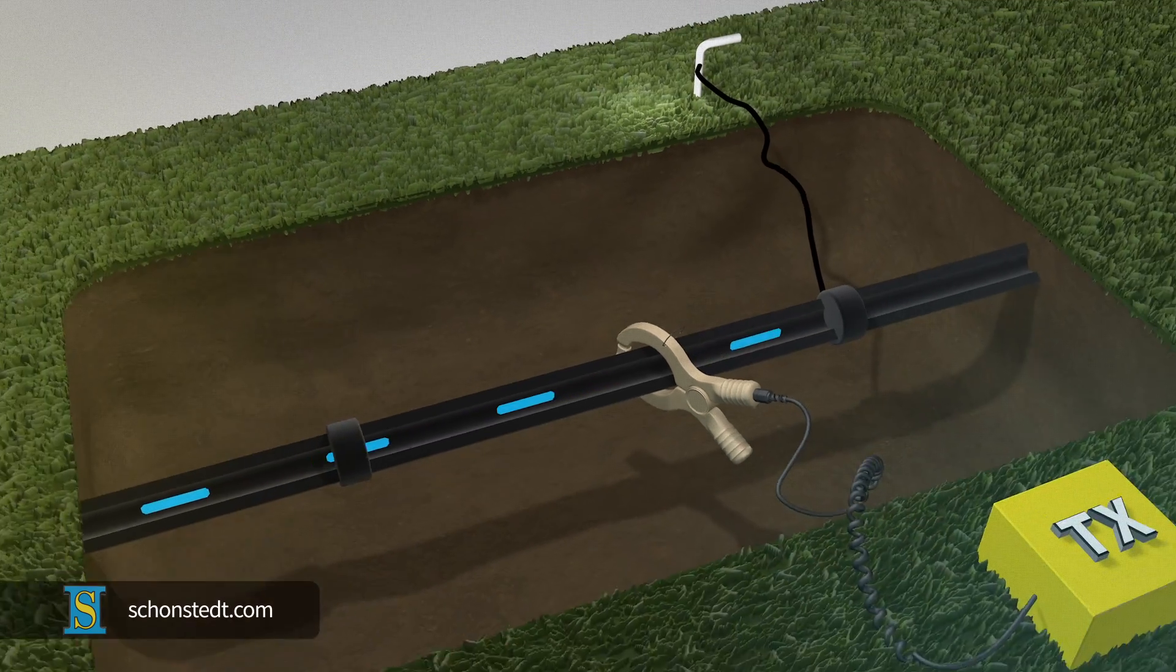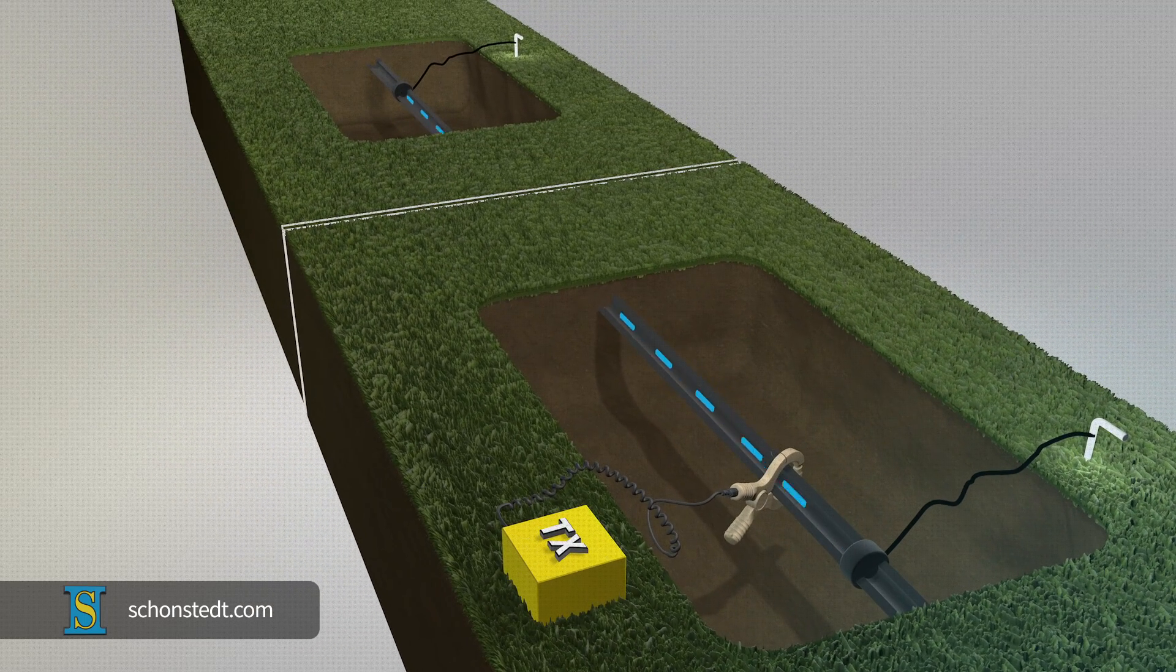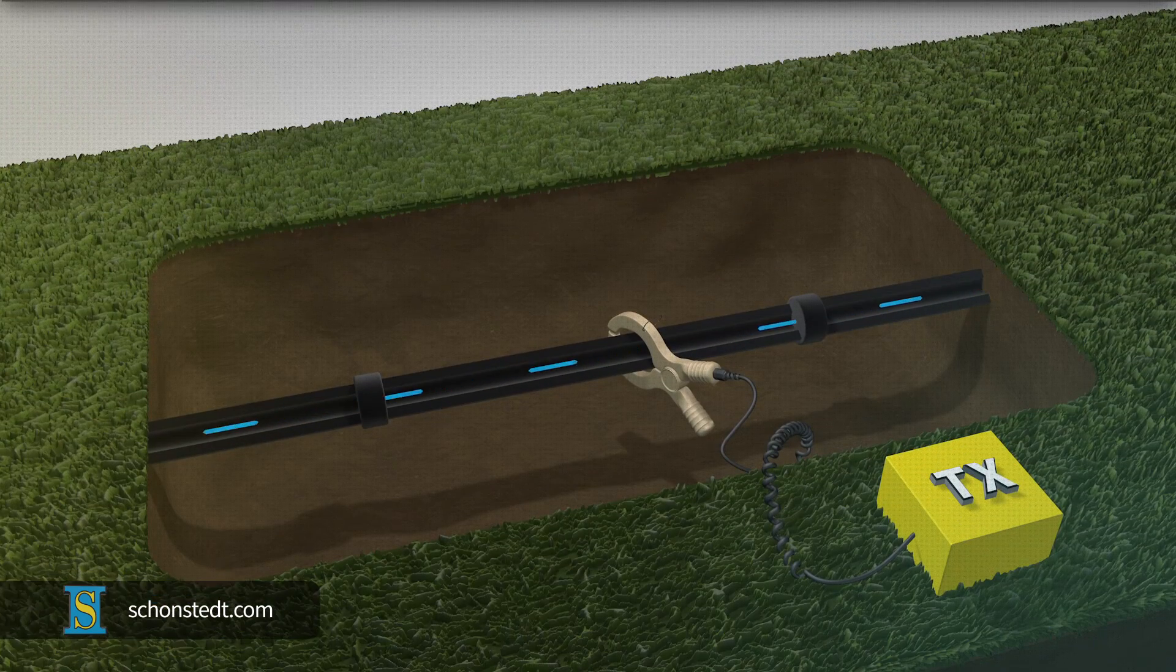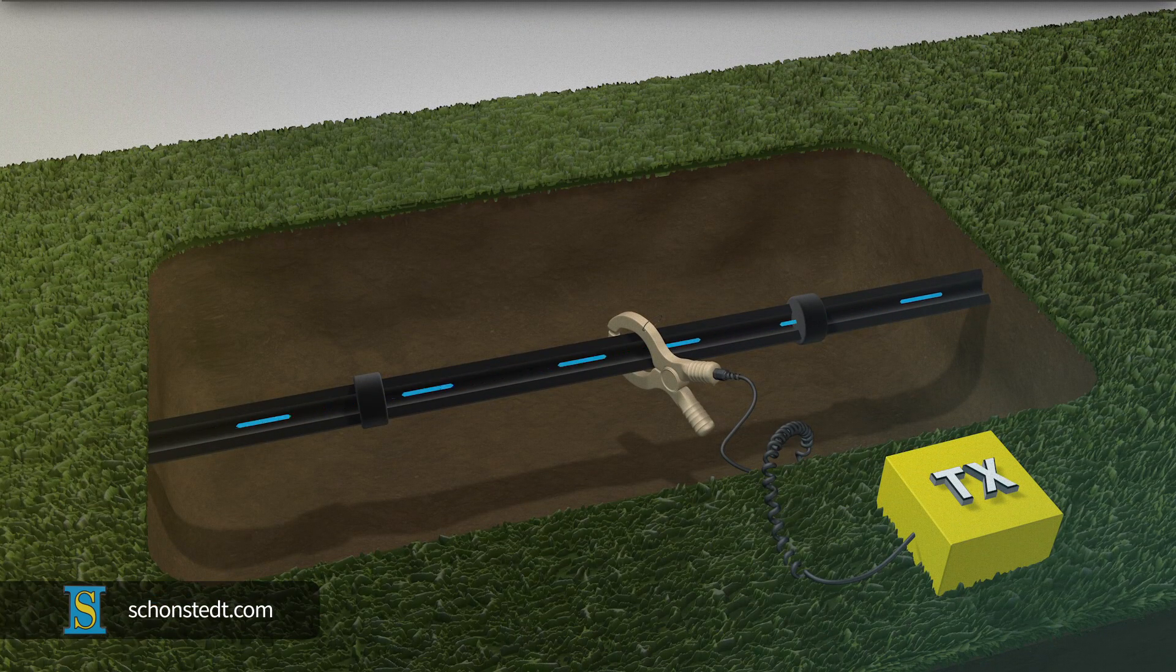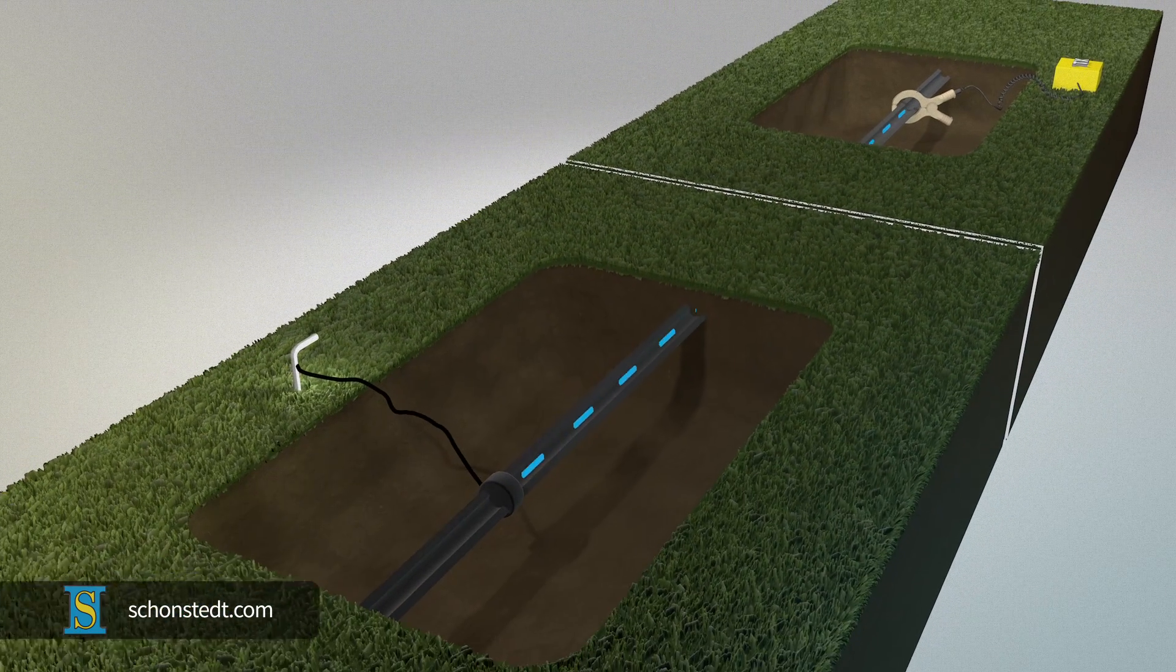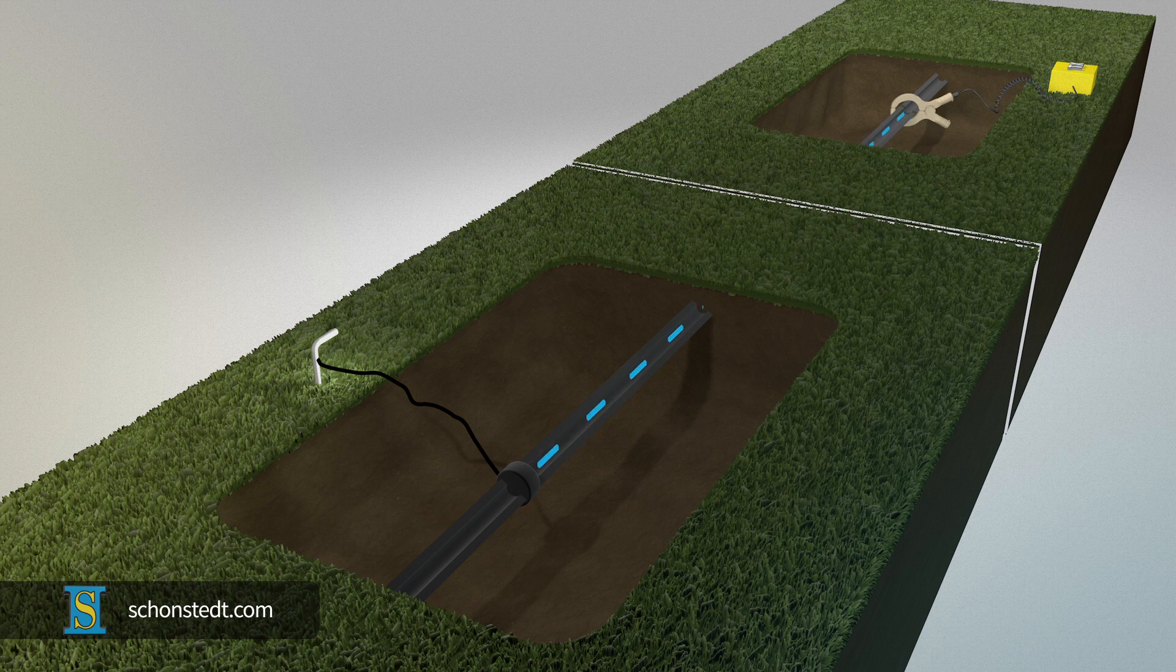At least one end, but preferably both ends—the near and far of the pipe or cable—must be well grounded. Without a ground, the current will be extremely low, which will make locating nearly impossible. If only one end can be grounded, it should be the far end. Otherwise, most of the current will quickly flow from the clamp to the near-grounded end.